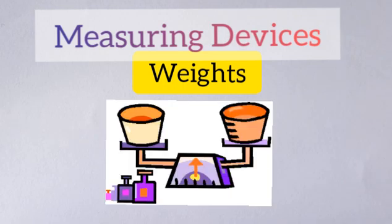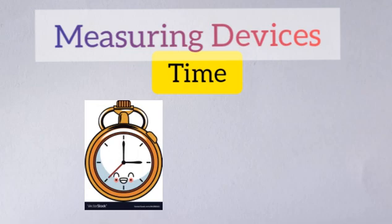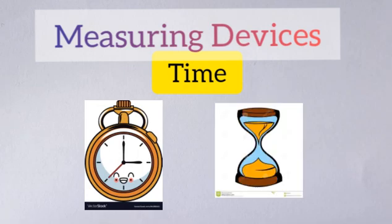Now let's have the instrument used to determine weights. We have here the platform balance. Now let's have the instrument used to determine time. We have here the clock and hourglass.